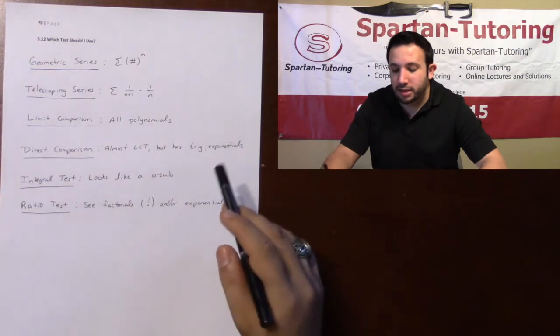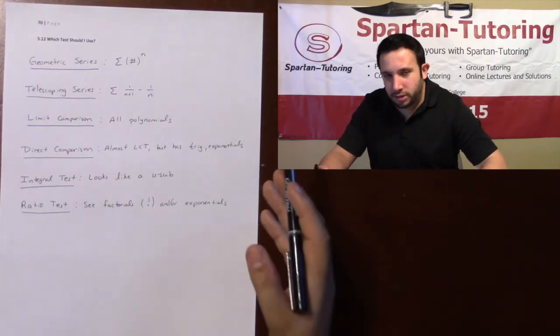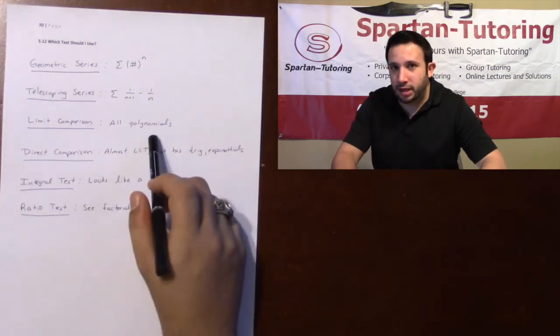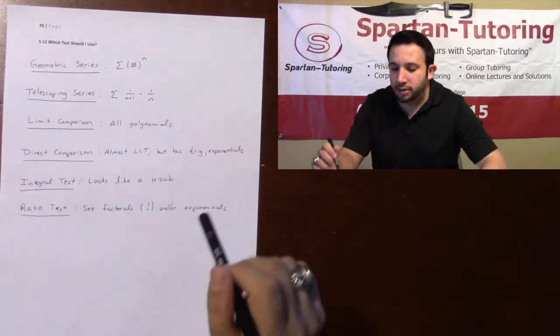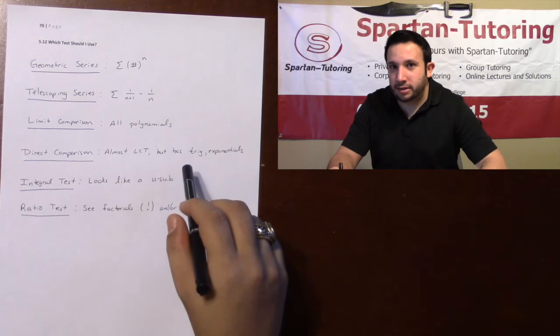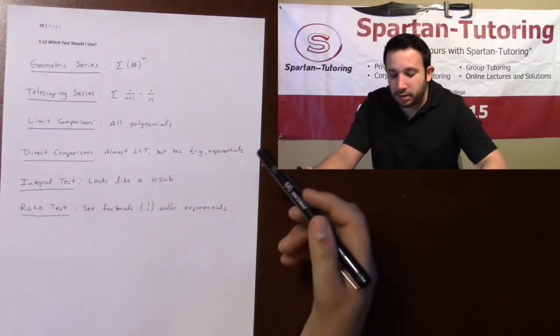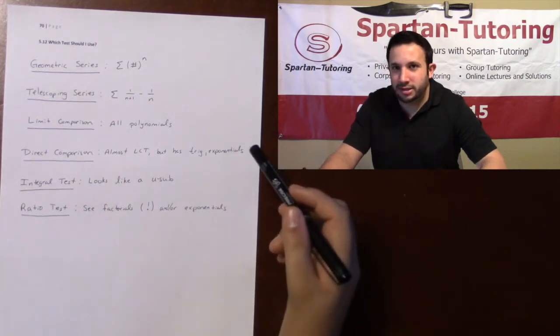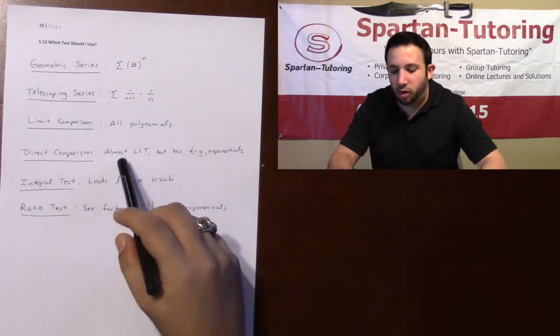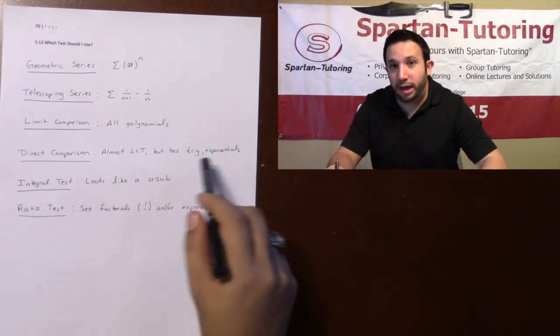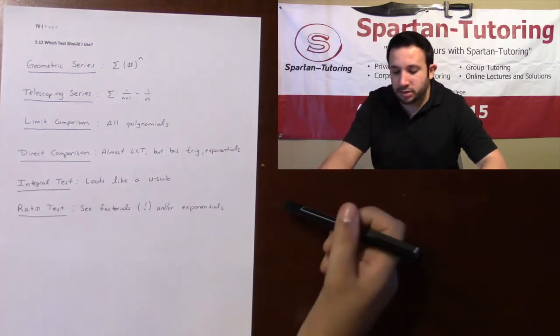For direct comparison test, it's when it's almost limit comparison. And so what I mean by that is, you do have polynomials, you have n squareds, n cubes, but thrown in there, you have sines and cosines, or exponentials like 2 to the n, 3 to the n, so you can't quite do the limit comparison to instantly get it. So when it's almost a limit comparison, almost all polynomials, but you're thrown extra stuff, that's a direct comparison.